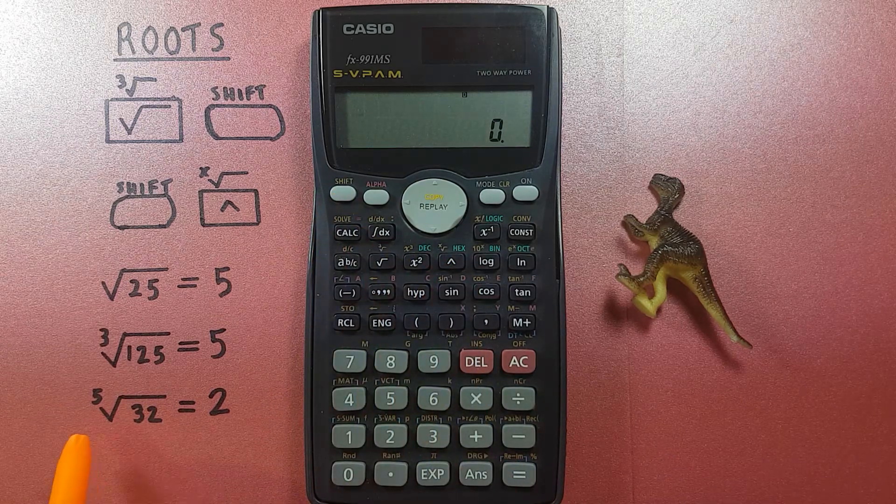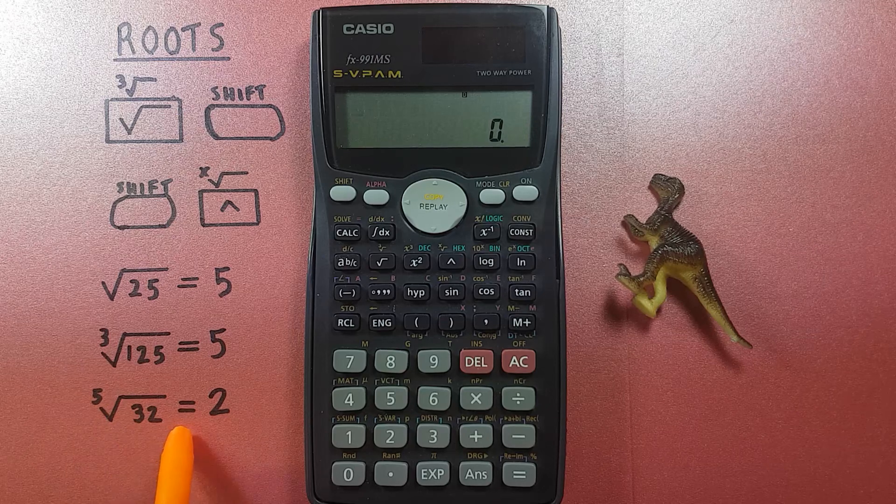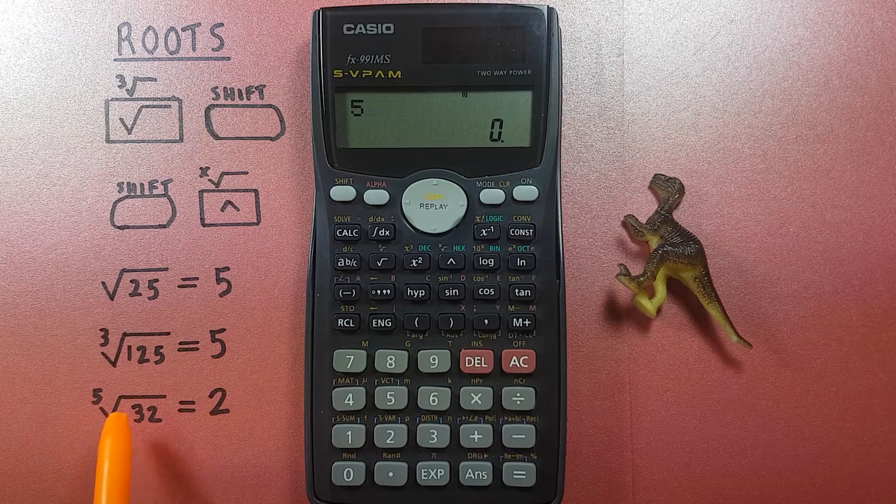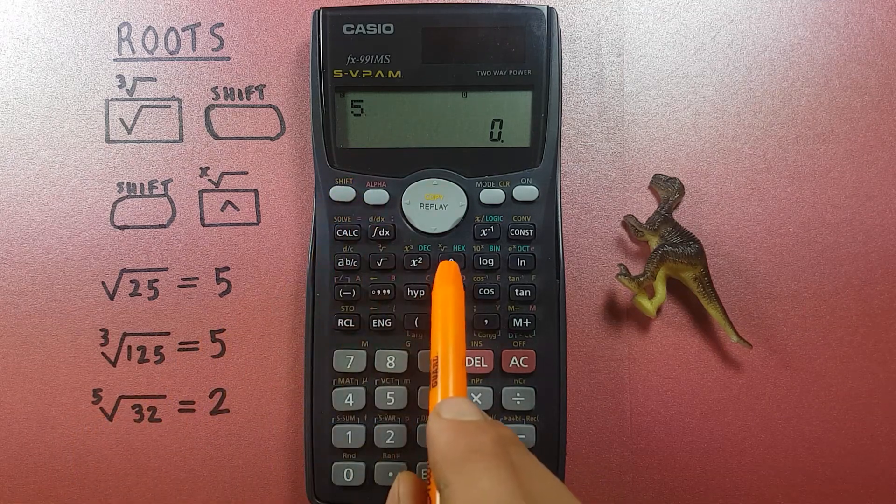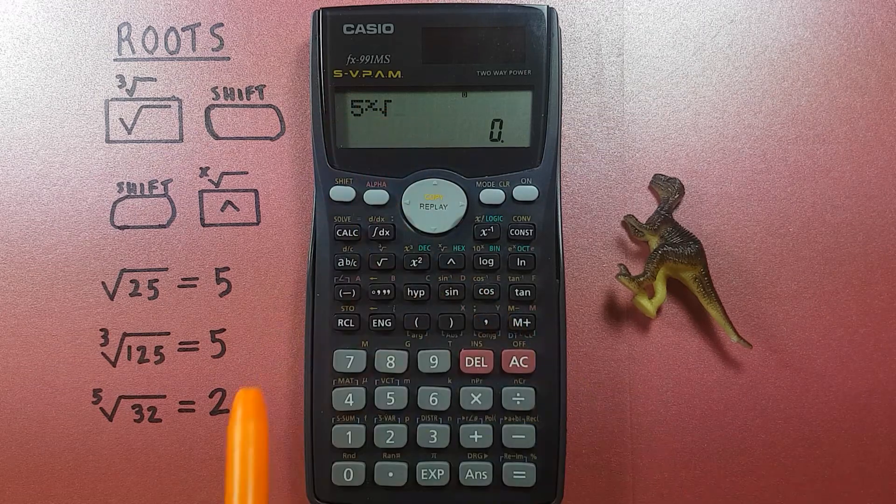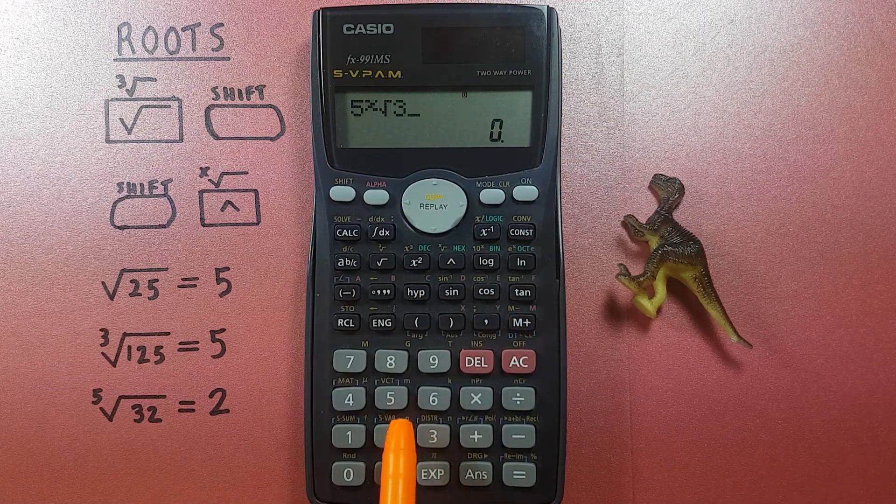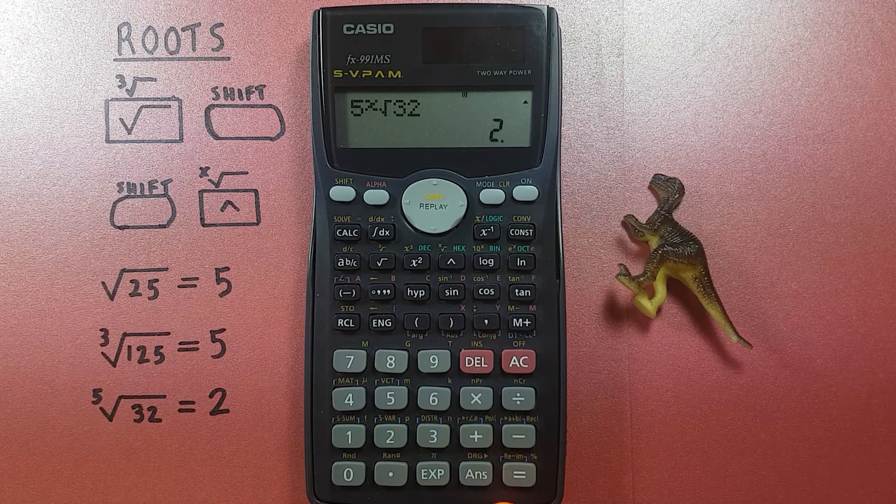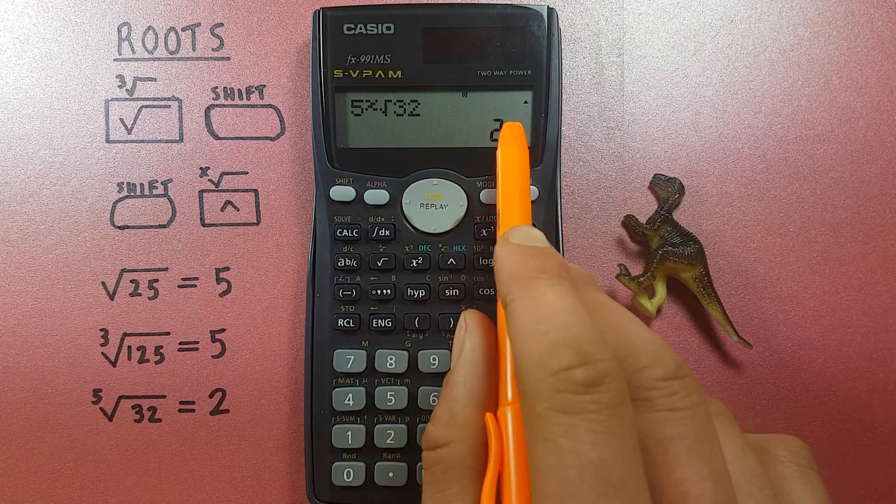So if we want to find the fifth root of 32, we would press 5 because that's the root, shift up arrow, there we see 5 x-th root, and then 32 because that's the number we're trying to find the root of, and press equals and it gives us the result.